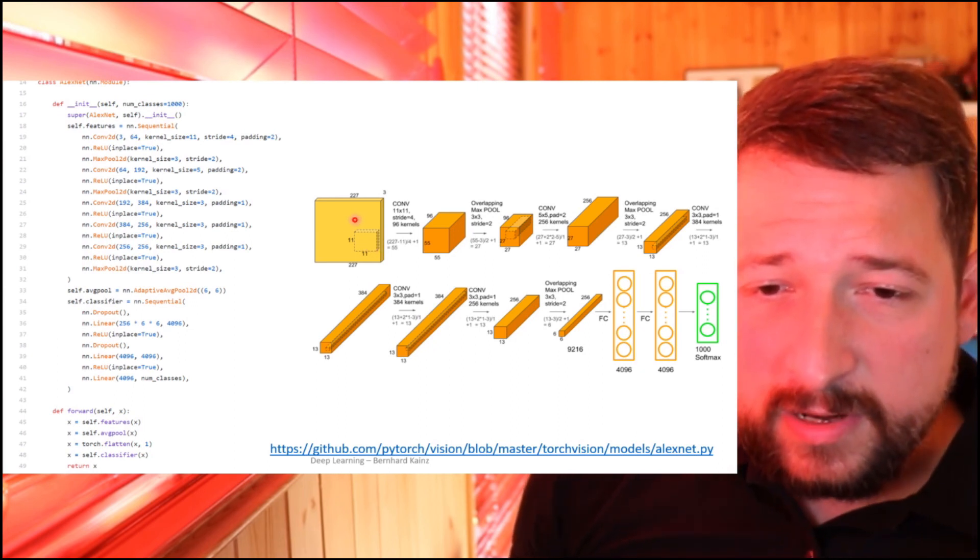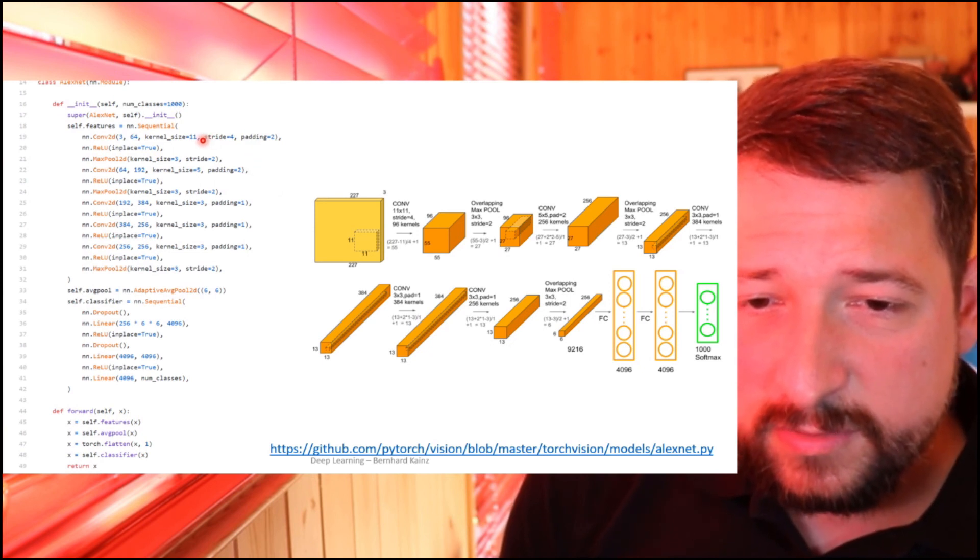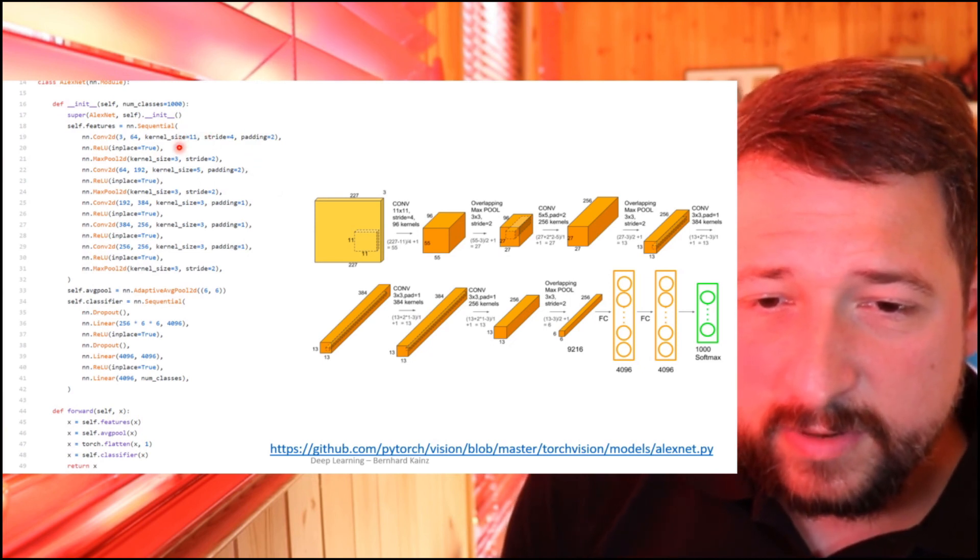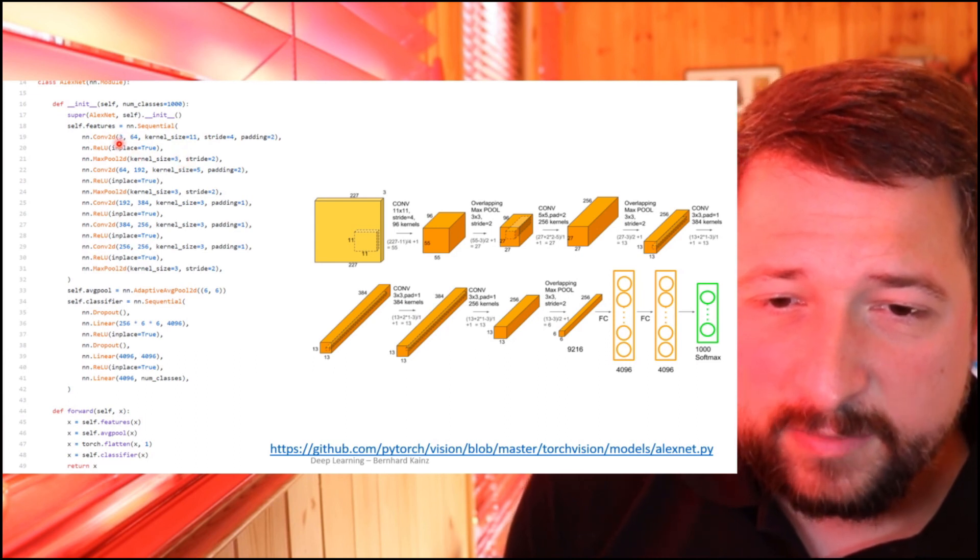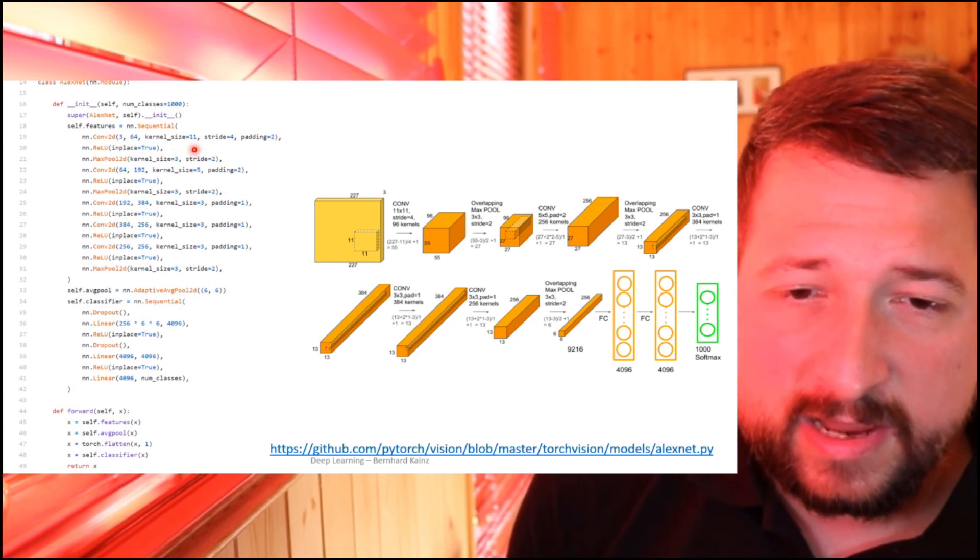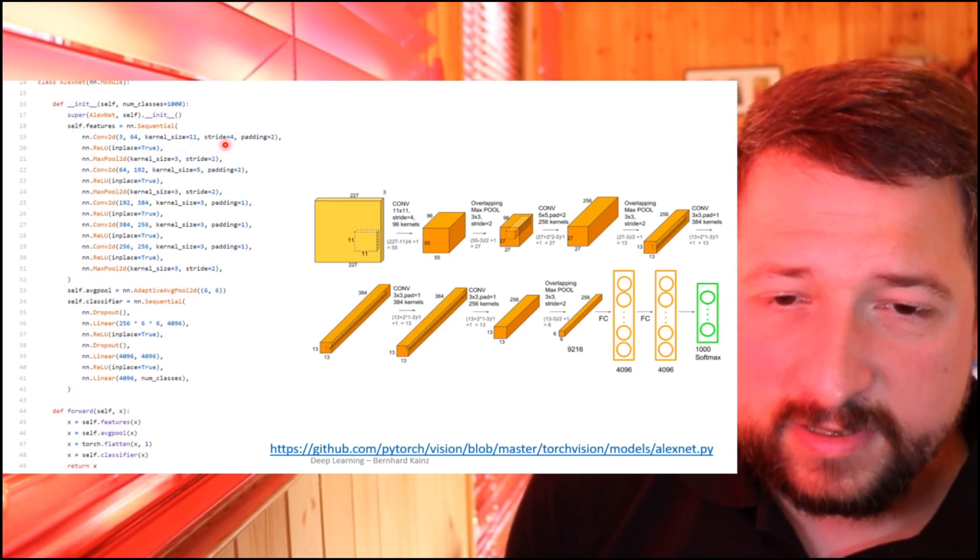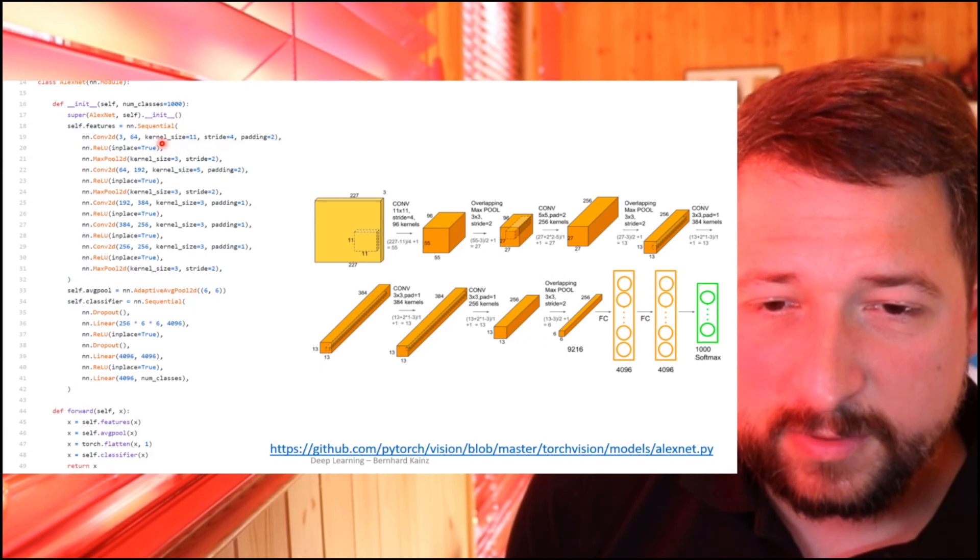So really, what we need to do is, again, collect the functions we need. We need 2D convolution functions, ReLUs, max pooling. So we start with three channels coming in. We want 64 feature maps coming out here at a kernel size of 11 by 11 at a stride of 4. This is kind of perhaps the key line here, which makes AlexNet quite distinct from other networks.